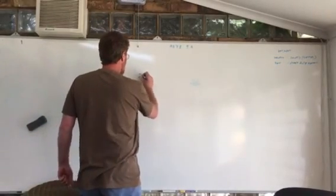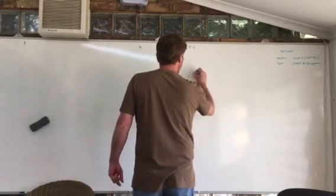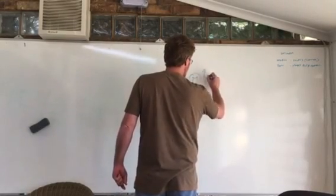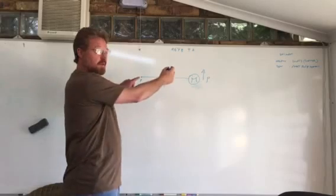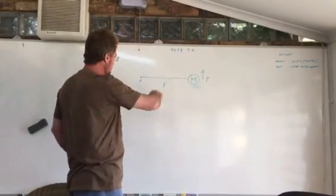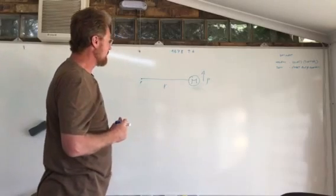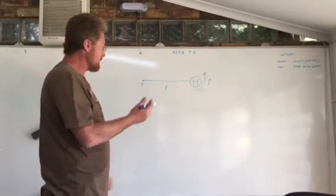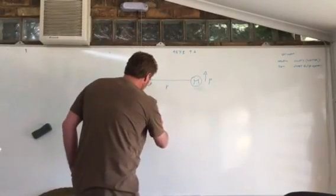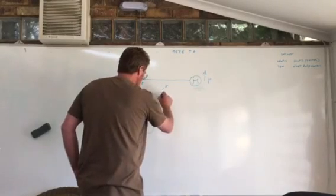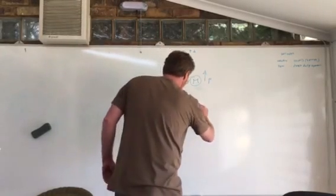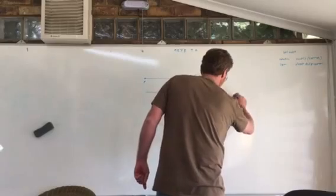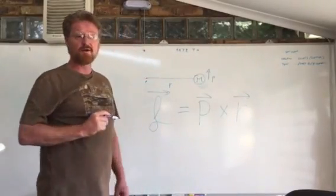There's a point P with a radius r, and an object on the end of a string with mass m that has a momentum in that direction. So in this situation the mass is rotating around point P on a tether. The equation for angular momentum, or the definition of angular momentum for this scenario, is angular momentum equals momentum cross product radius. Okay, very simple.